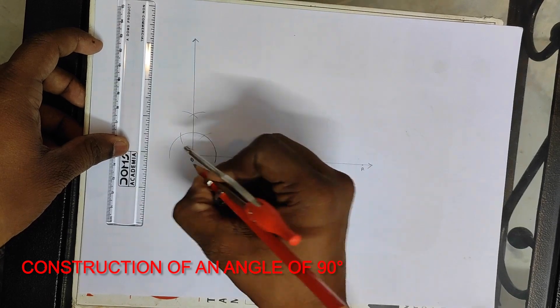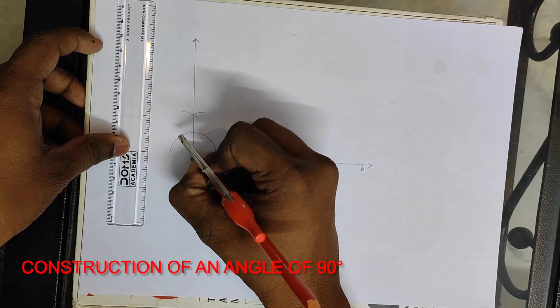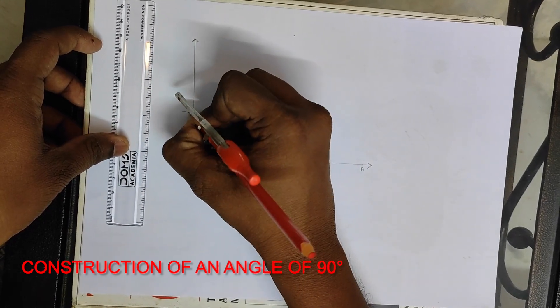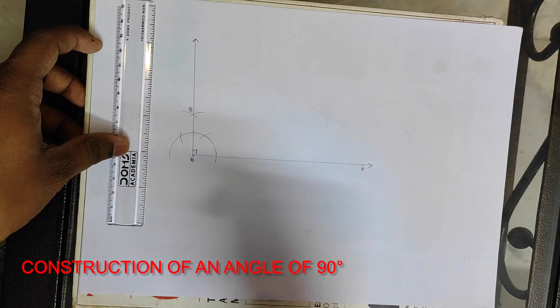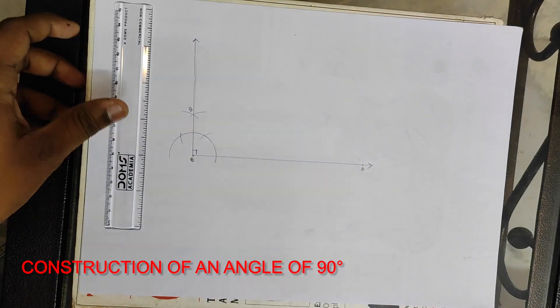You now have your 90 degree angle. Call the top intersection point B, so angle BOA is your 90 degree angle.